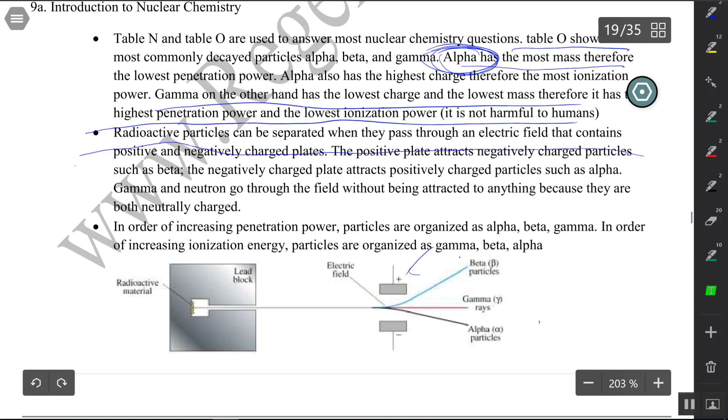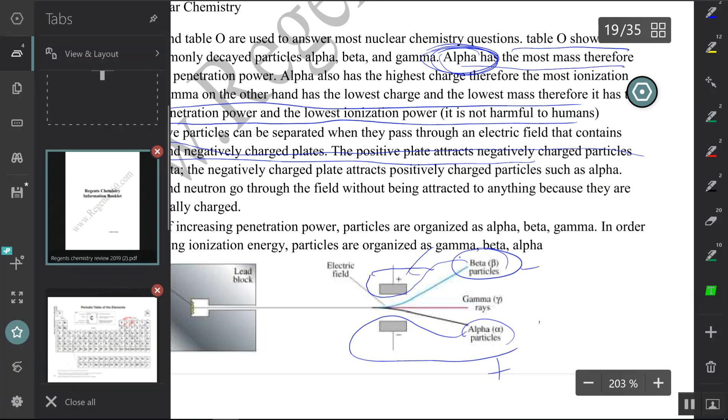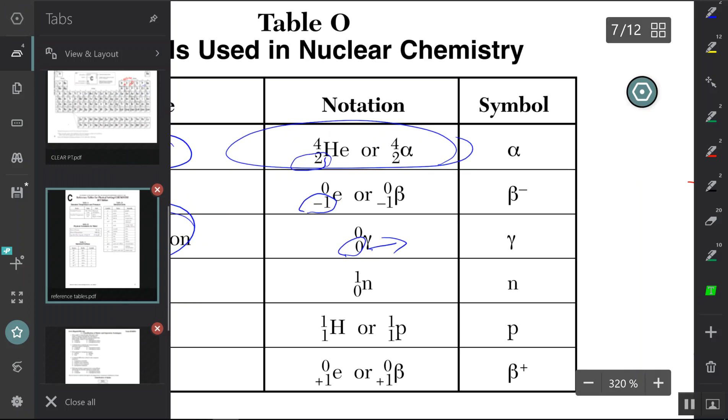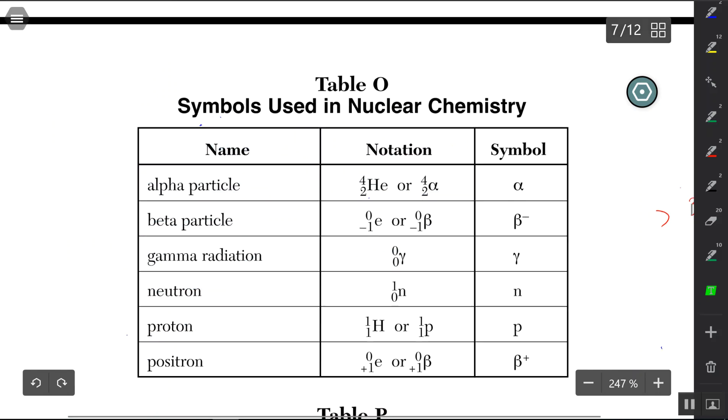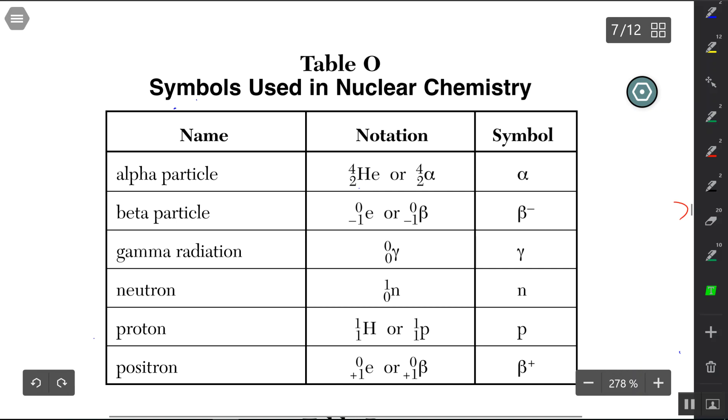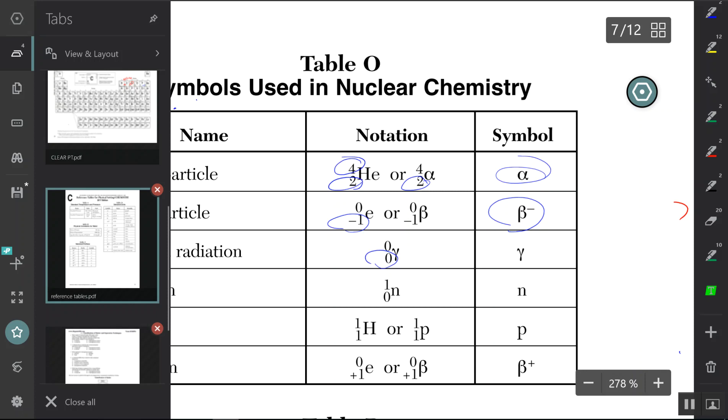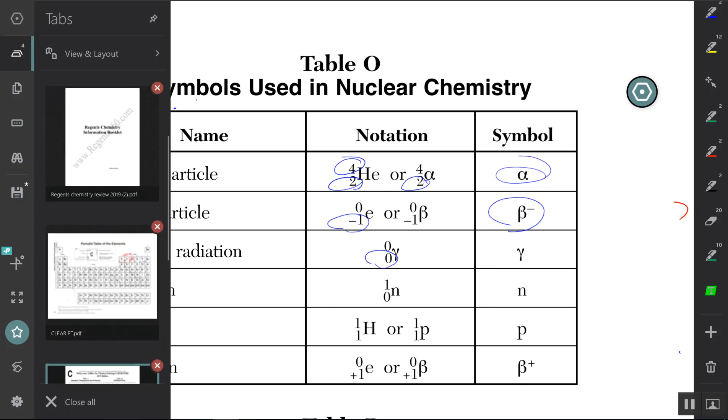Here's more about how you can separate radioactive particles. The alpha will attach itself to the negative because alpha is positive, and the beta will attach itself to the positive because beta is negative. You can look at Table O right here. The masses are always on top. Keep in mind: mass on top, and the charges are at the bottom. So here alpha has a charge of two. Here's a symbol for alpha as well. Beta charge of negative one, symbol for beta. Gamma charge of zero. The masses on top, charges at the bottom.